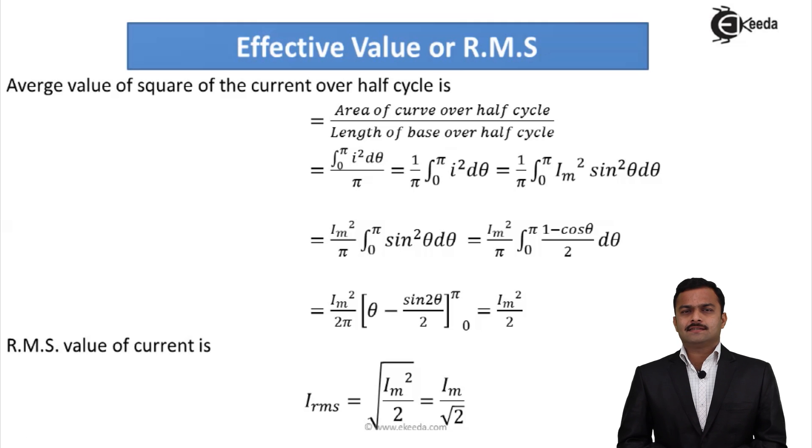So in the voltage case, I will get V_RMS = V_m/√2, and we know 1/√2 is 0.707. So finally I can say I_RMS = 0.707 I_m and V_RMS = 0.707 V_m.